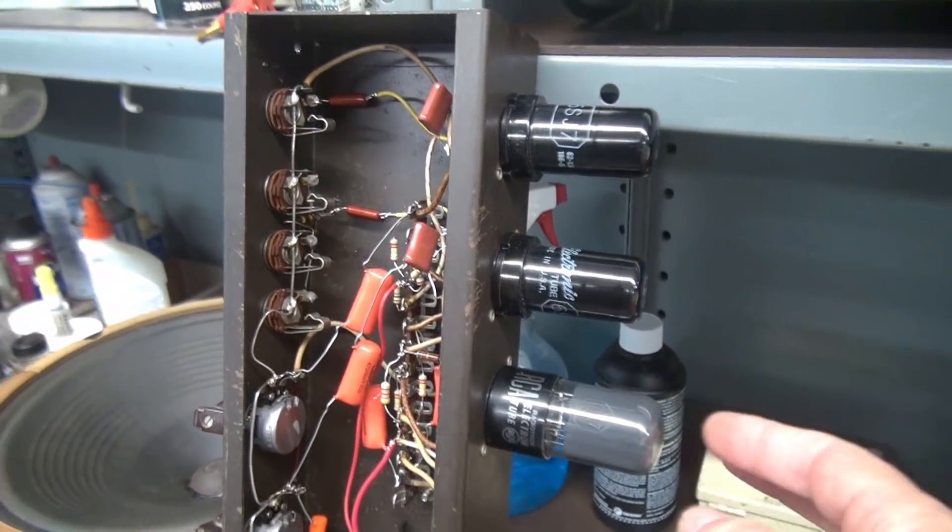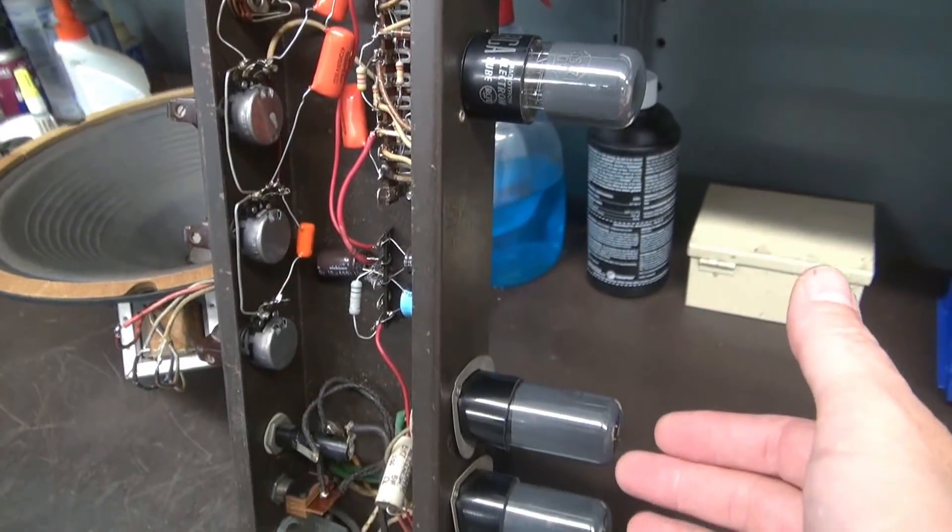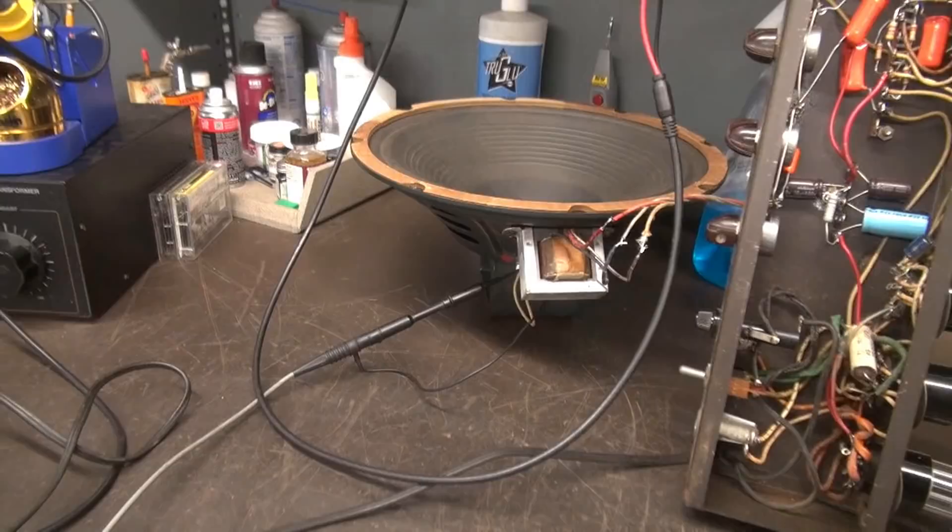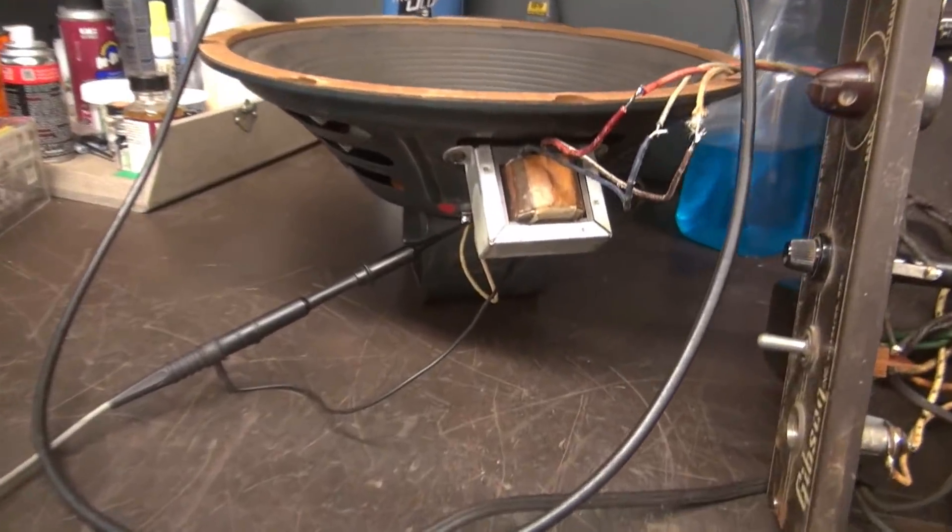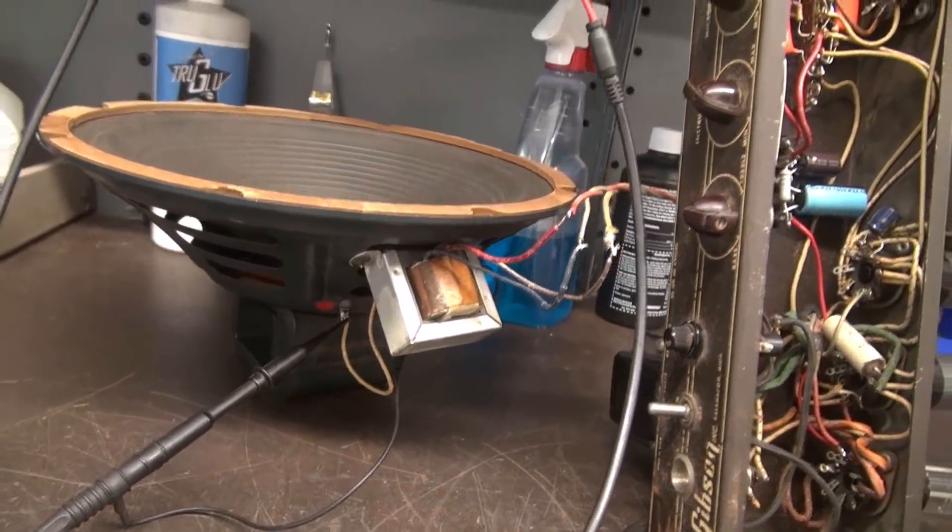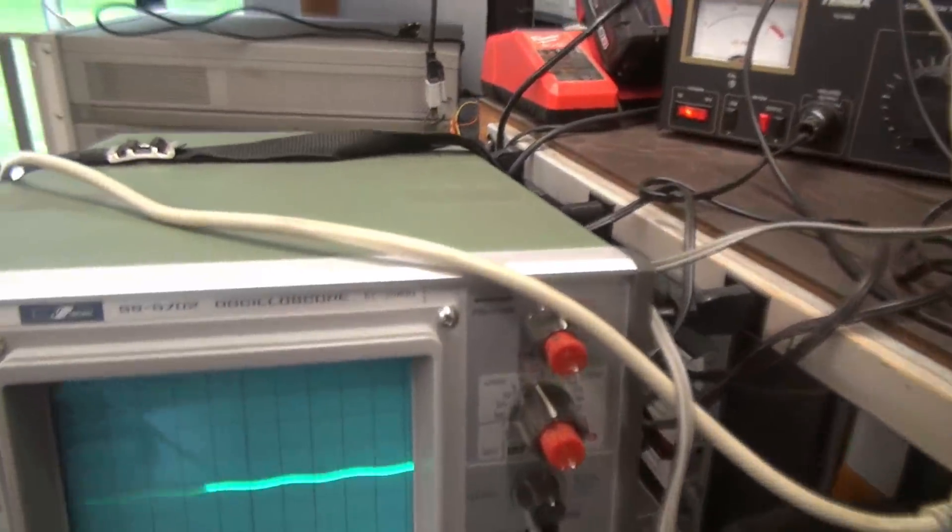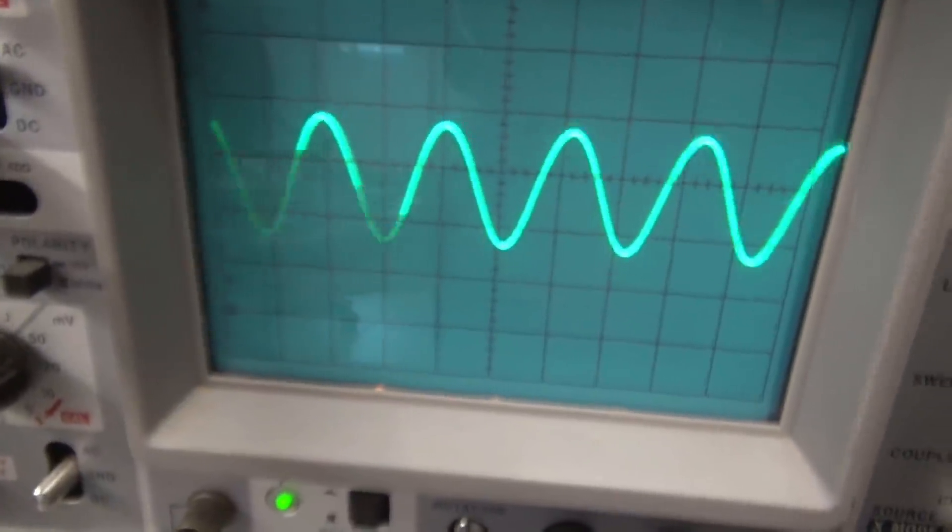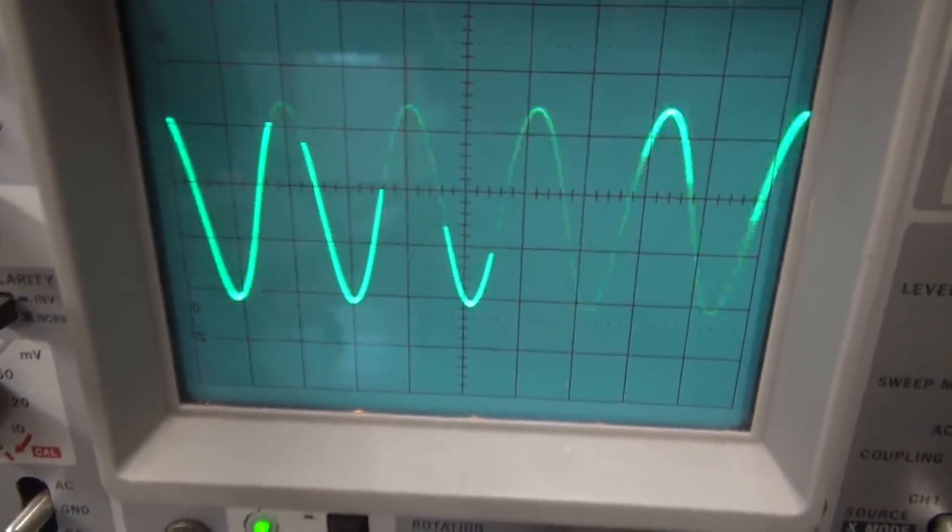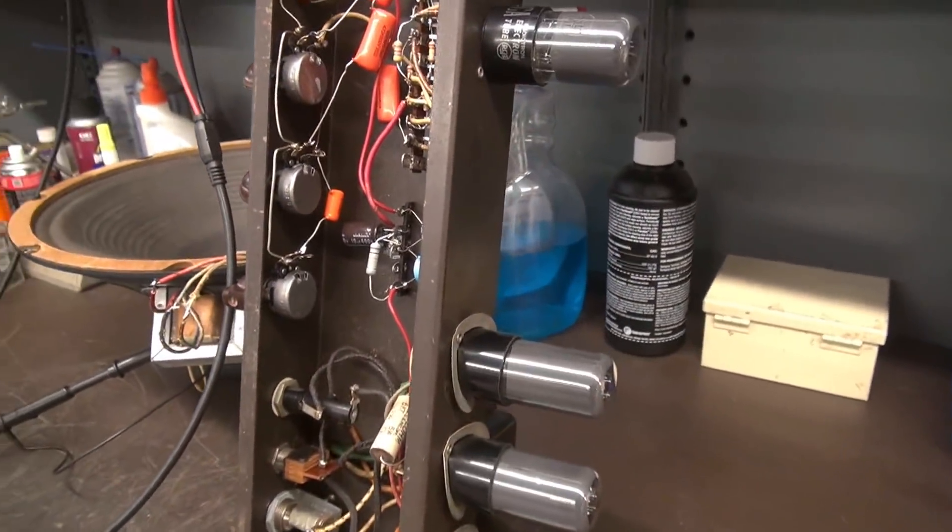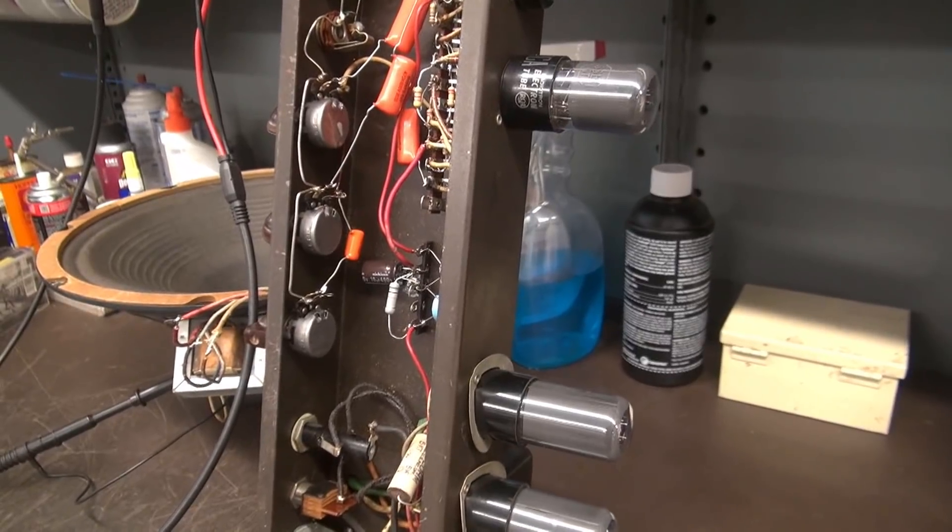Now before I change out the inverter and the output tubes I want to take a look at this thing on the scope. All right, the scope is connected across the voice coil of the speaker. Going to it with the audio generator. We'll take a look at it on the scope. So that's good. Good sign. Now I want to check the output tubes and the inverter and if they're healthy I'm going to leave them in.